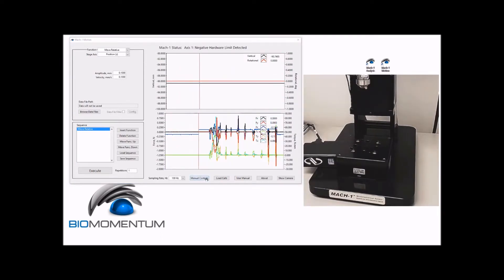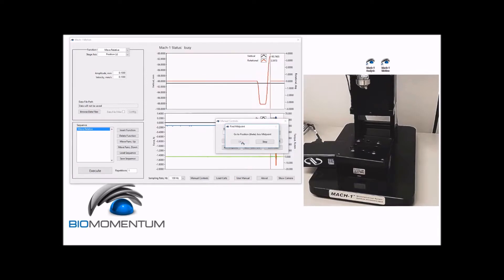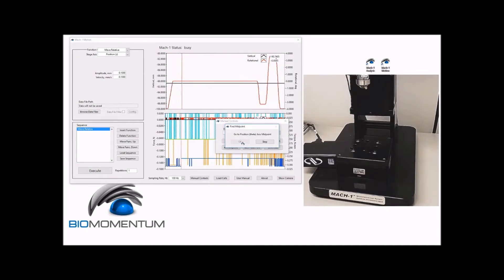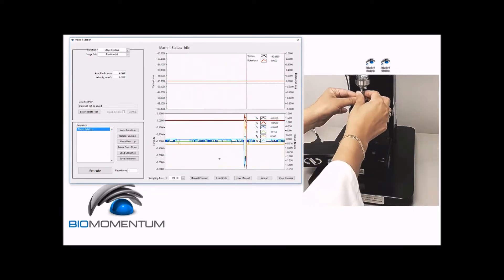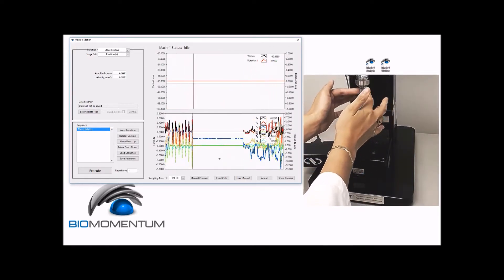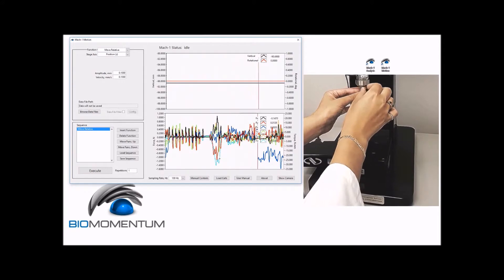Open the manual controls window and set the axis to position theta. Set the rotational stage to its midpoint using the axis midpoint button. Then gently screw the flat indenter under the load cell and lightly finger tighten to secure it.